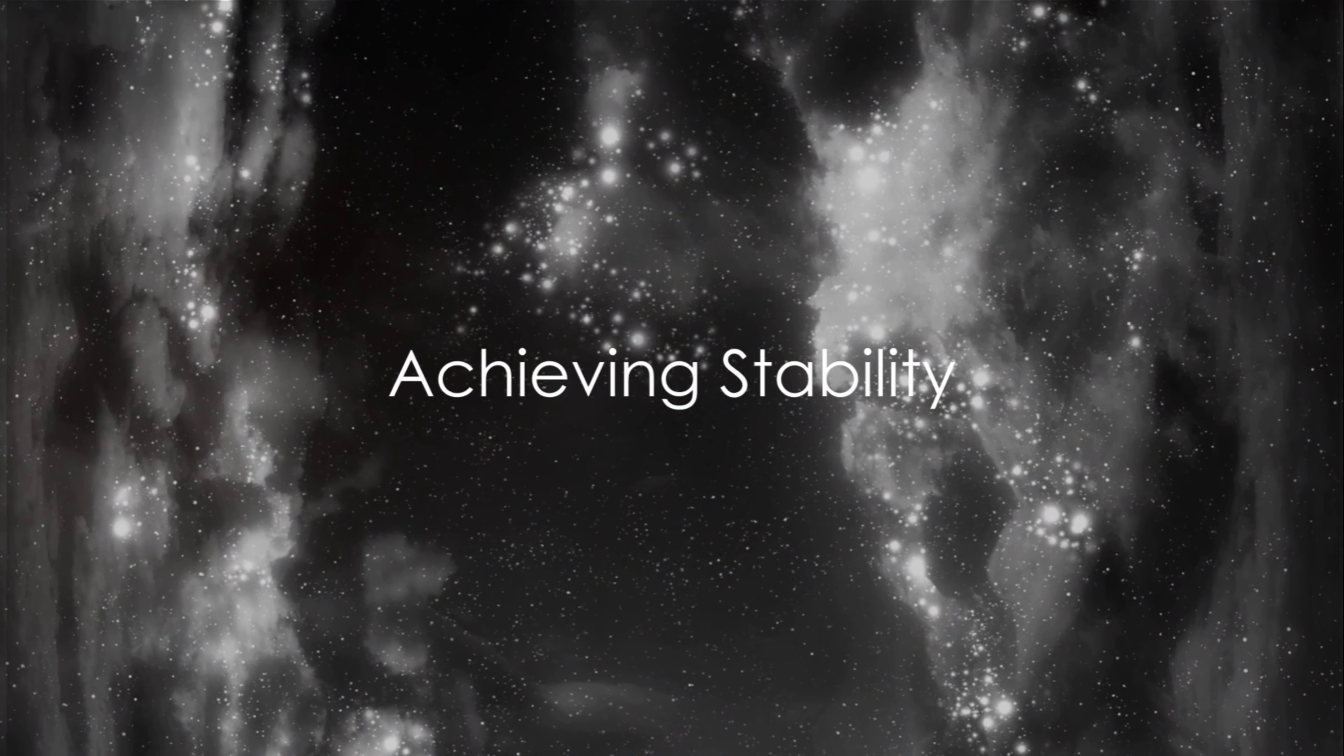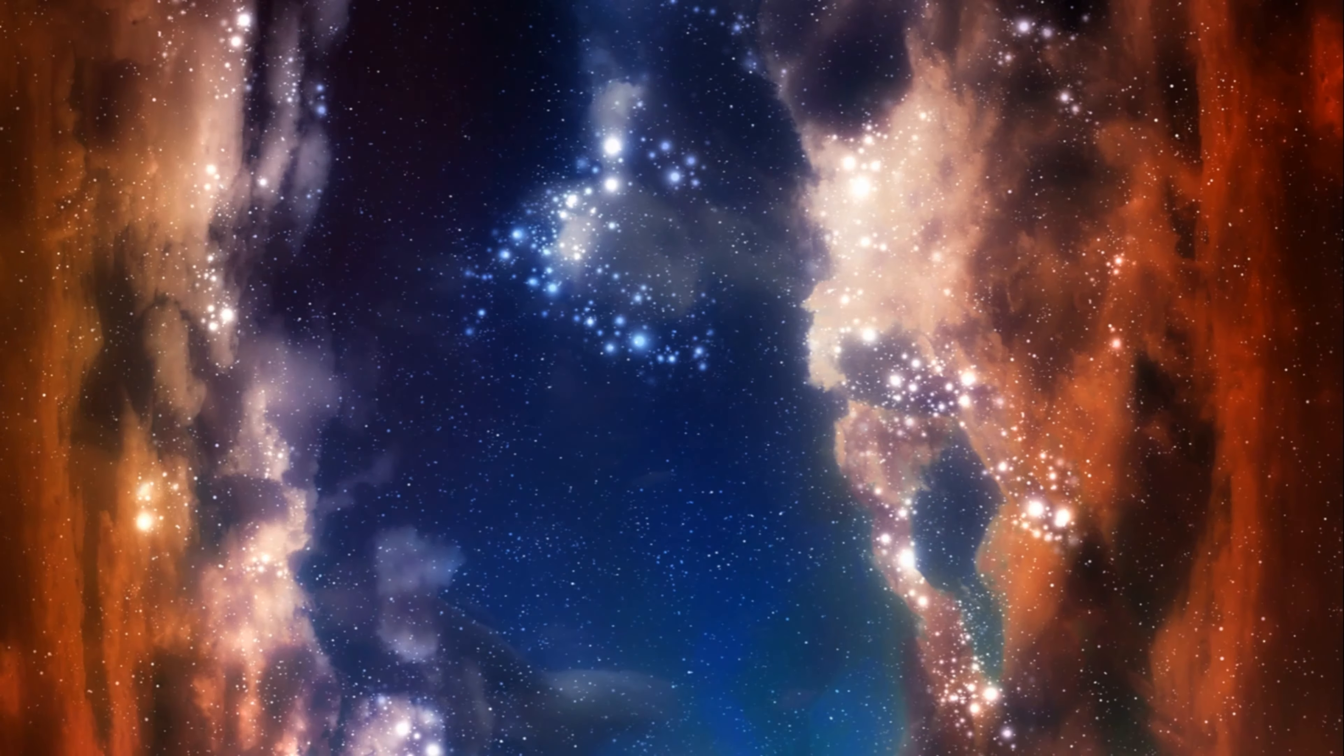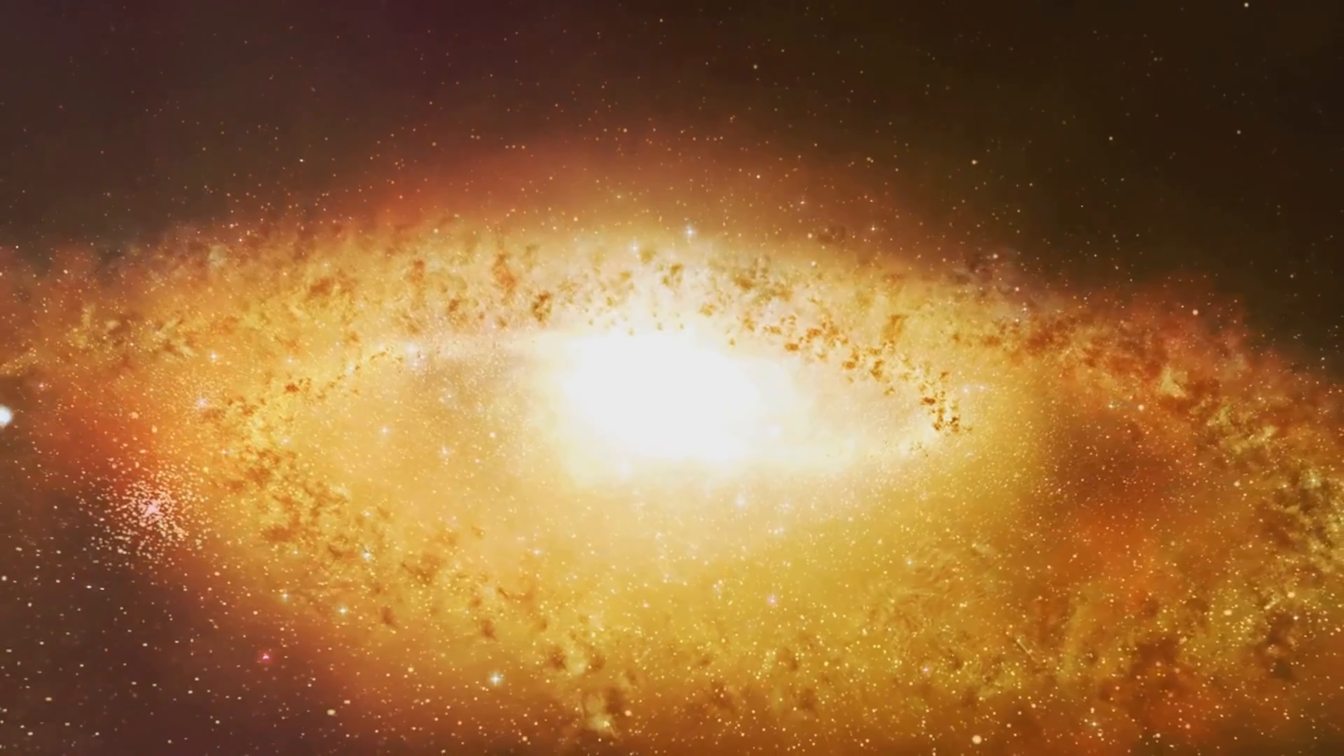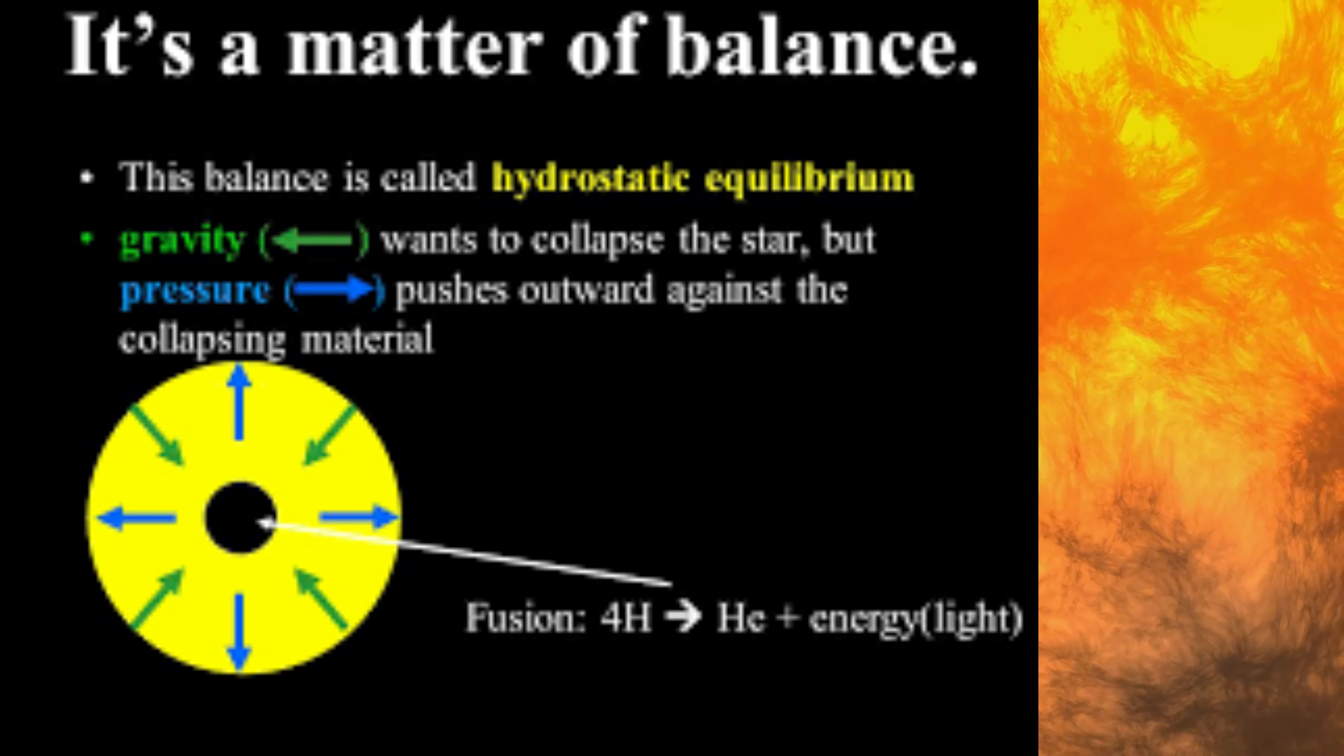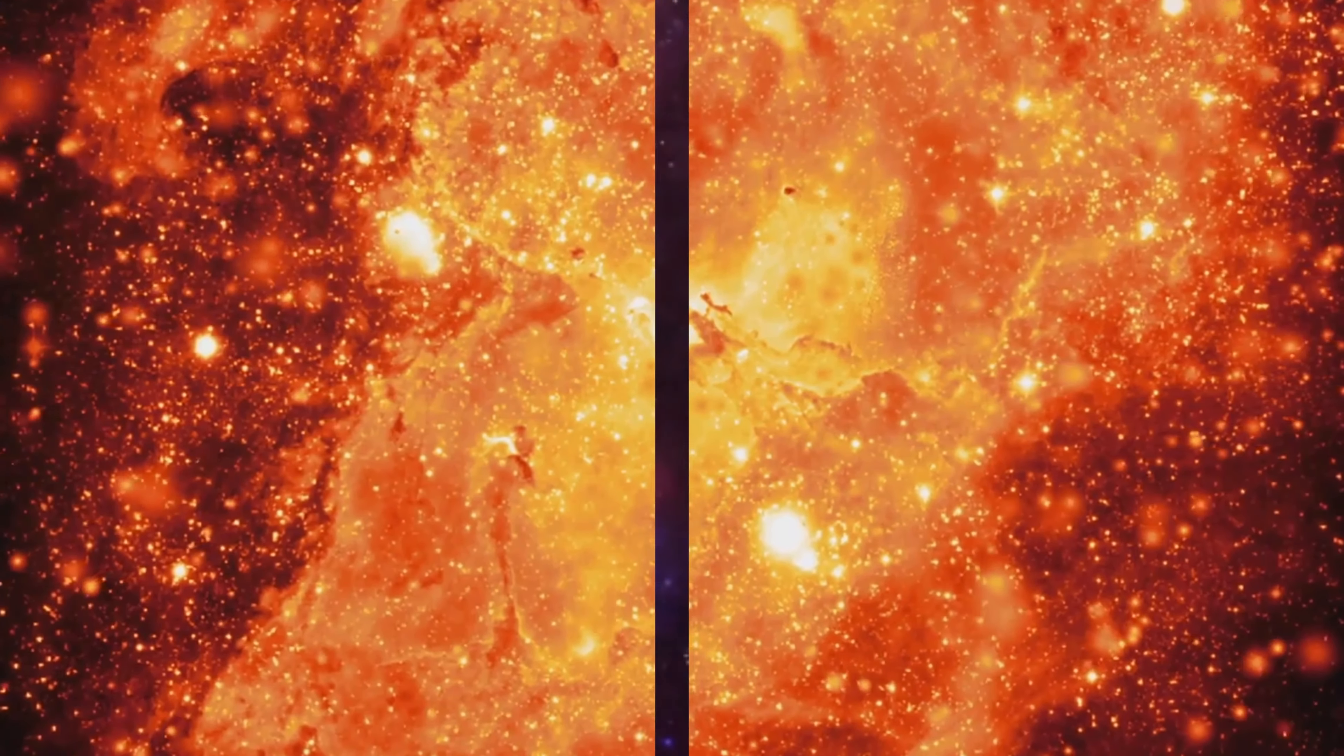However, a protostar cannot remain in this state forever, it must achieve stability. The stage of stability is reached when the gravitational pull is balanced by an outward force. This outward force is generated by the high temperature resulting from nuclear fusion. Once this equilibrium is achieved, the protostar transitions into a stable star, paving the way for its life as a full-fledged star.